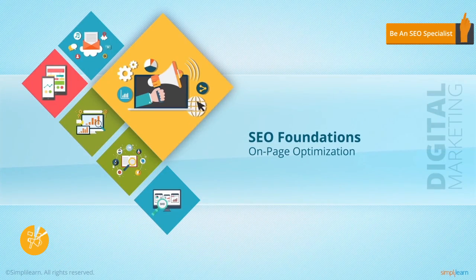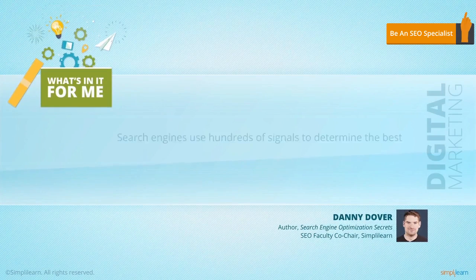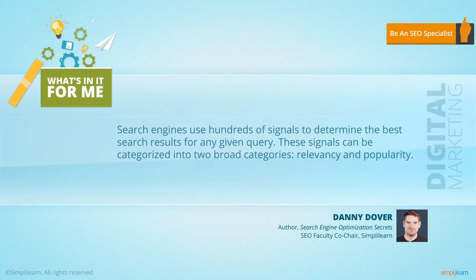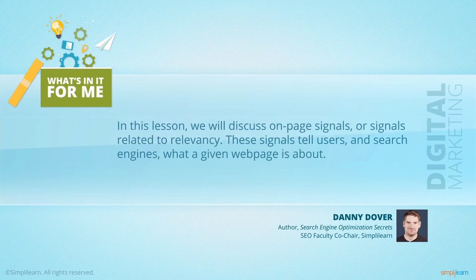Welcome back to SEO Foundations. In this video, we're going to cover on-page optimization. There are hundreds of signals used by search engines to determine the best search results for any given query. Generally speaking, these signals can be categorized into two broad categories: relevancy and popularity. In this lesson, we will be discussing on-page signals, or signals related to relevancy.